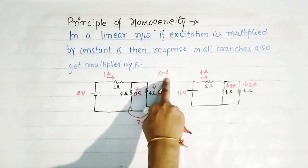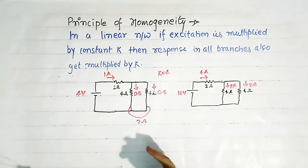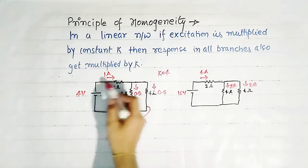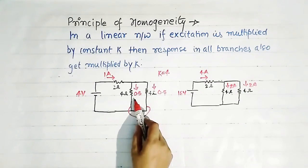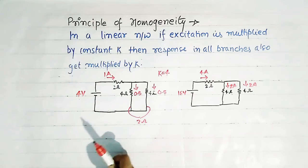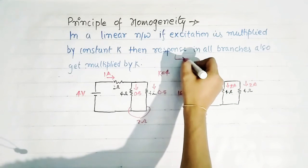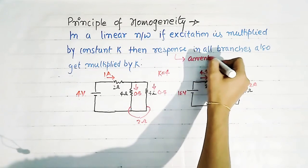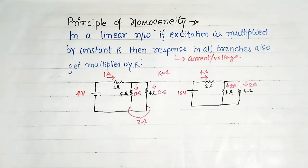We can clearly see that when the voltage source is multiplied by 4 and becomes 16 volt, the response — meaning current in all branches — also gets multiplied by 4. Here current was 1 ampere, now it is 4 ampere. Here current was 0.5 ampere; multiplied by 4 it becomes 2 ampere. So response in each branch gets multiplied by 4. Response means current or voltage. This is the principle of homogeneity.